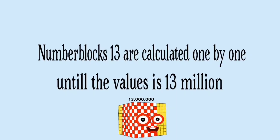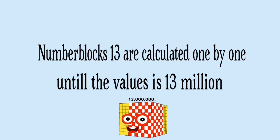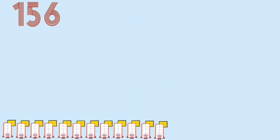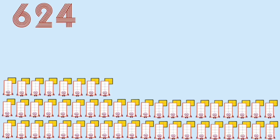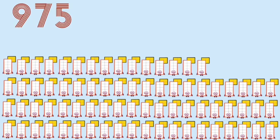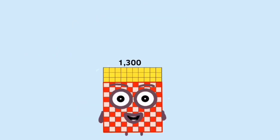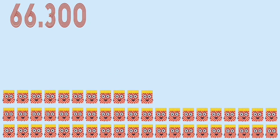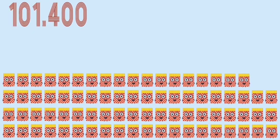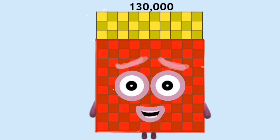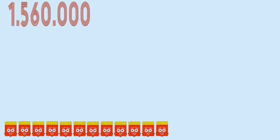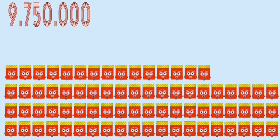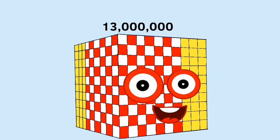Number blocks thirteen are calculated one by one until the value is thirteen million. Thirteen. 130,000. 13 million.